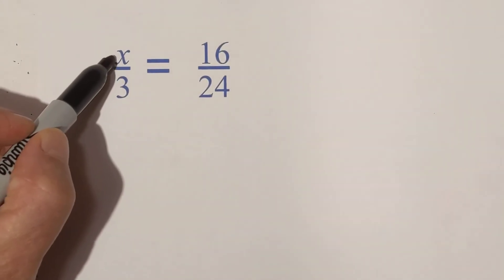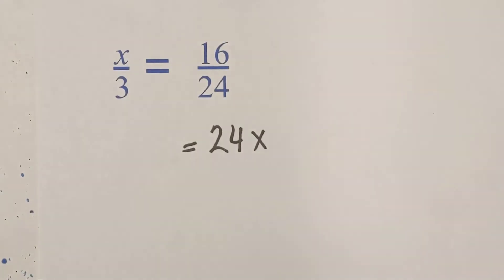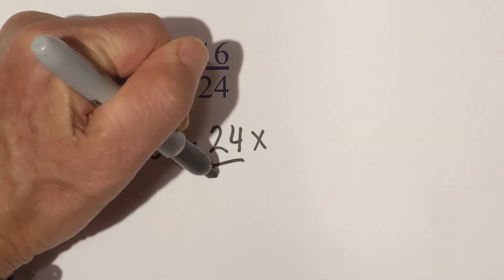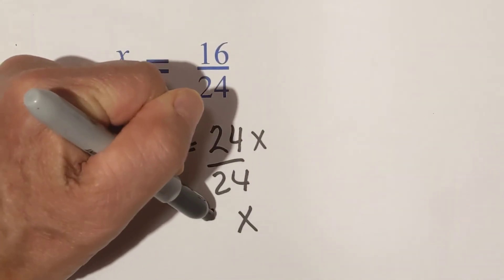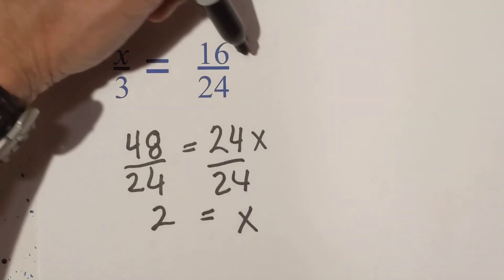Okay, now we have x times 24, or 24x is equal to 16 times 3 is 48. Divide both sides by 24. These cancel. And 48 divided by 24 is 2.